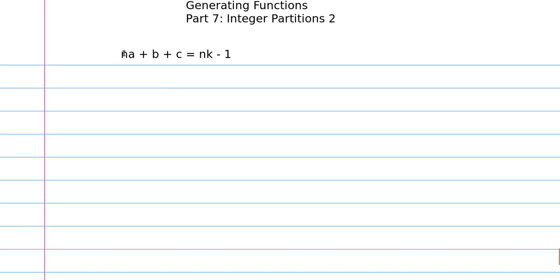In the last video, we looked at equations of the form Na + B + C = Nk - 1, and we found a relatively nice solution using generating functions and what I call the coefficient space, which I wrote as sort of a matrix.